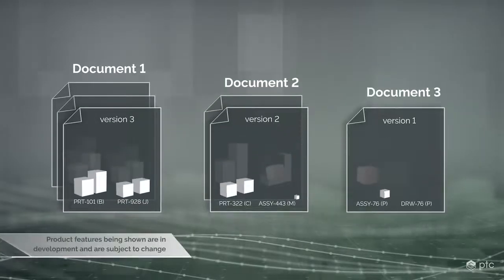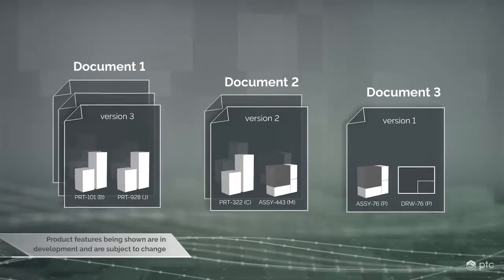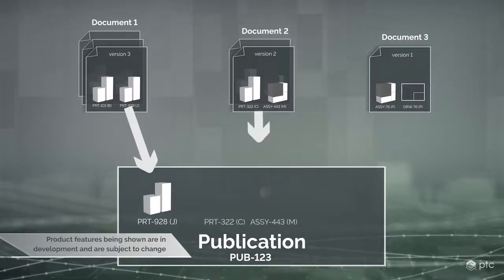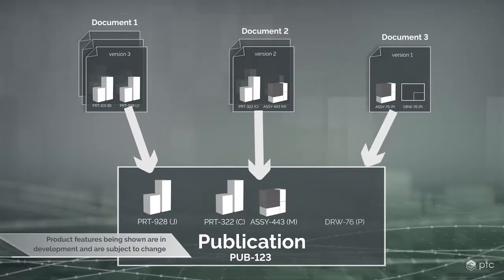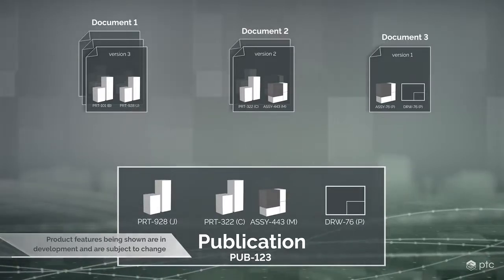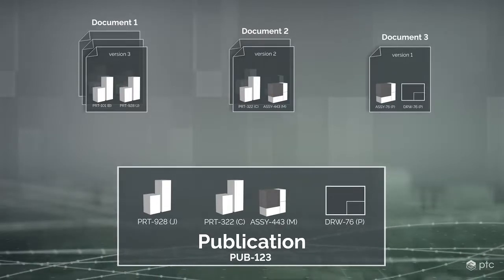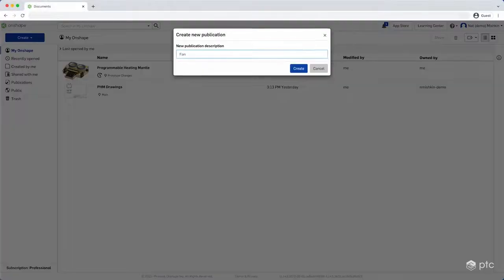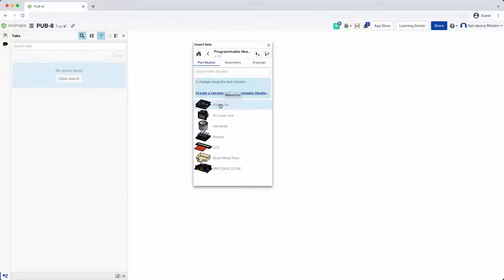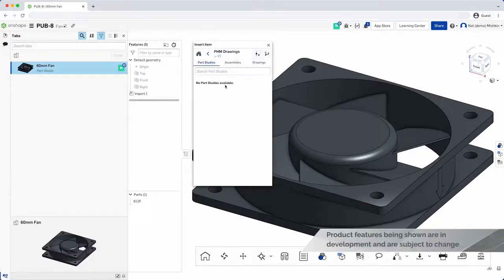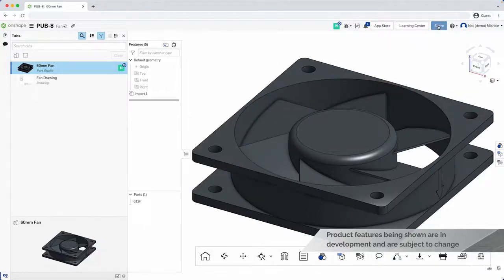A publication is a collection of specific versions or revisions of parts, assemblies, and drawings that are in one or more Onshape documents. Some people call this type of collection a technical data package. You create a publication and insert specific versions or revisions of parts, assemblies, and drawings into it. Here, I create a fan publication and first insert the fan assembly from my main design document, and finally insert the fan drawing from a document that contains my drawings.